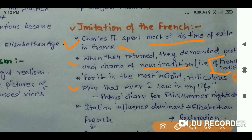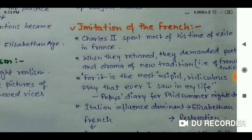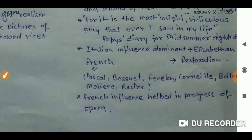We can see this in Pepys' Diary, which is an important historical source. Pepys writes about Shakespeare's A Midsummer Night's Dream and calls it 'the most insipid' — meaning boring — 'and ridiculous play that ever I saw in my life.' He writes this because of French influence. So Italian influence dominated the Elizabethan period, and French influence dominated the Restoration.